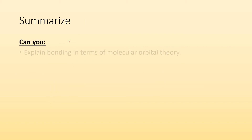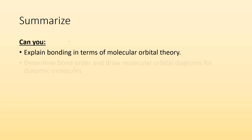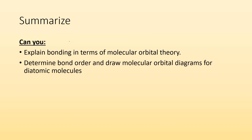To summarize: can you explain bonding in terms of molecular orbital theory? Can you determine bond order and draw molecular orbital diagrams for diatomic molecules? I hope so. Goodbye.